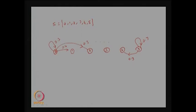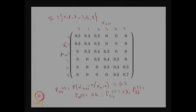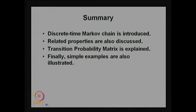The state transition diagram has nodes 0, 1, 2, 3, 4, and 5. We fill all arcs with weights from the one-step transition probability matrix — for example, 0 to 0 with probability 0.3, 0 to 1 with 0.4, 0 to 2 with 0.3, 5 to 4 with 0.3, and 5 to 5 with 0.7. Arcs with zero probability are not drawn. In this lecture we have discussed discrete-time Markov chains, key properties, the one-step transition probability matrix, and two simple examples. This concludes lecture one for module four.